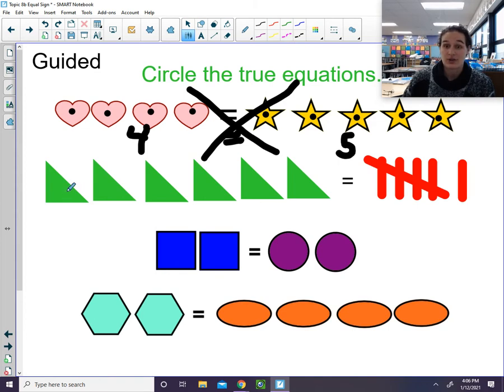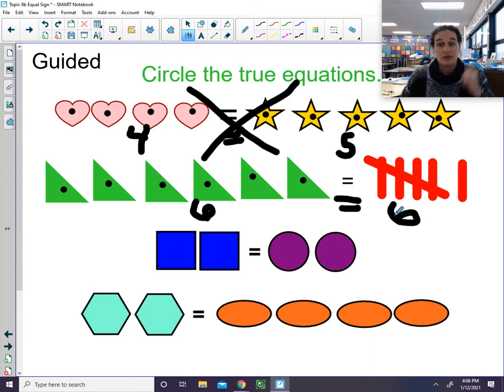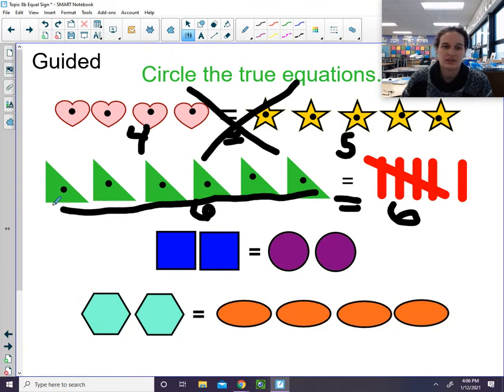Okay, let's count the triangles. One, two, three, four, five, six. Is equal to one, two, three, four, five, six. Thumbs up or thumbs down? Is it a true equation? It is a true equation, so we will circle it.